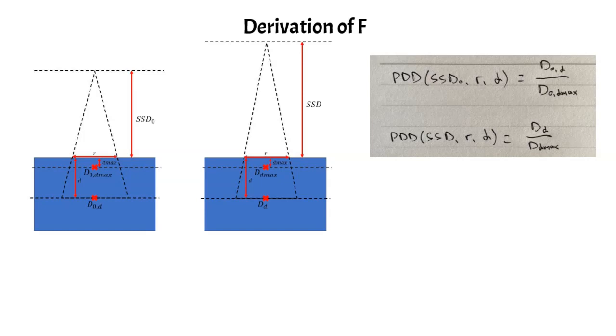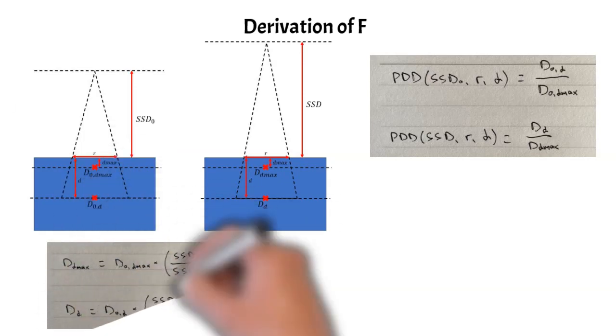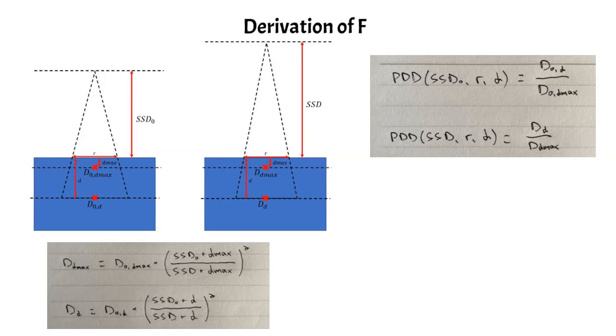And now we can actually relate the dose in the figure on the right to the dose in the figure on the left using the inverse square law. So these are those relationships here. You can see that you start, the numerator is always where you started, and the denominator is where you're moving to, so we always have SSD knot in the numerator in this case. And this is just the equation for relating the dose on the right to the dose on the left using the inverse square law.